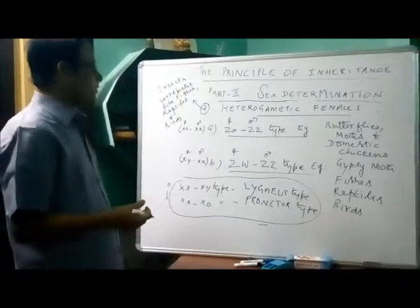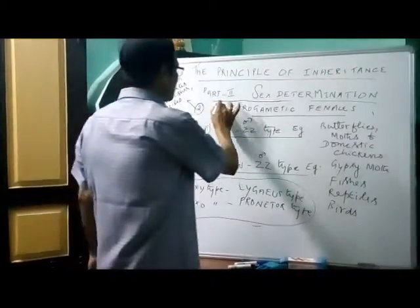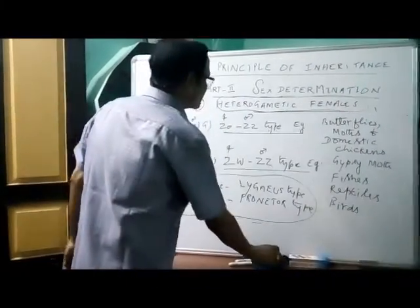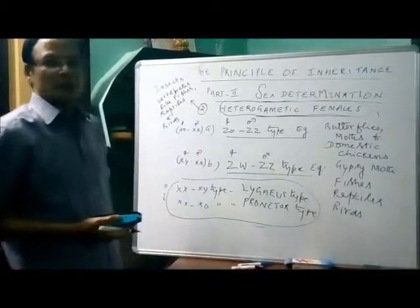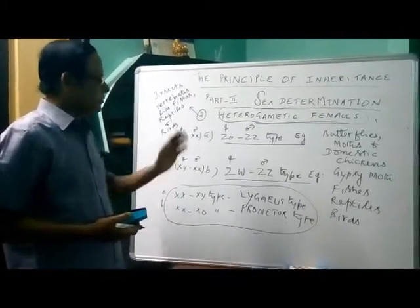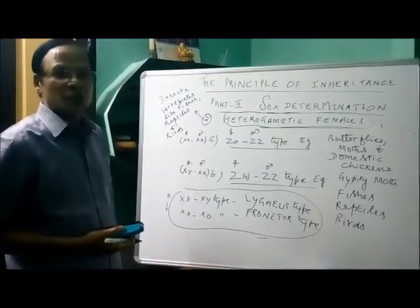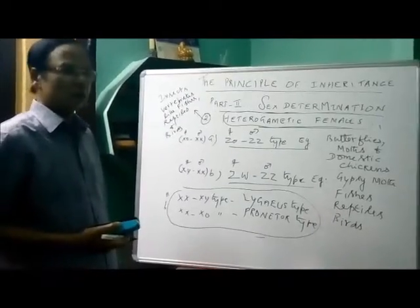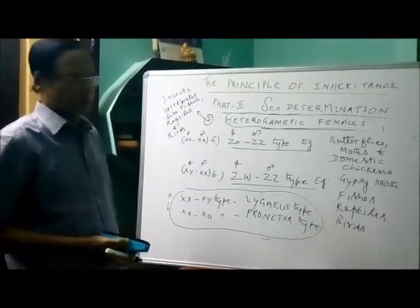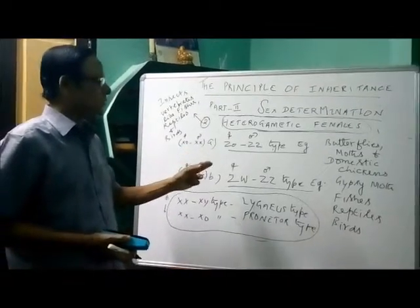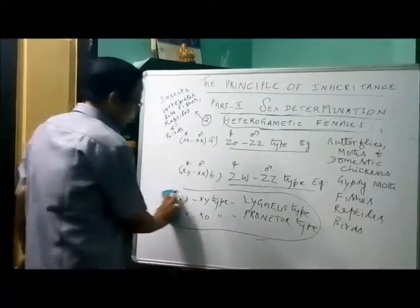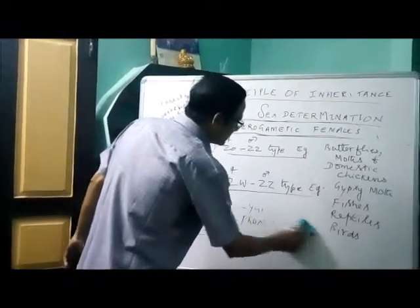Now let us proceed further about heterogametic females. In this case, the females are heterogametic and males are homogametic. The sex will be decided by the nature of the egg that is being fertilized by the sperm — by the nature of the egg, not the sperm. What are the types of heterogametic females?